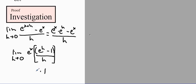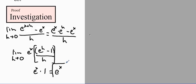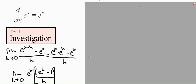So that bracketed portion, the limit of e to the h minus 1 over h, approaches 1. We have that times e to the x. As h approaches 0, this approaches 1, and e to the x doesn't change because there is no h in it. So we have e to the x times 1, which gives us e to the x. We just verified using the definition of a derivative that the derivative of e to the x equals e to the x.